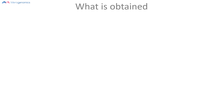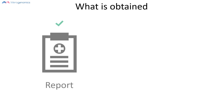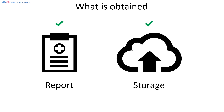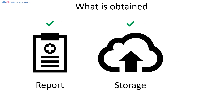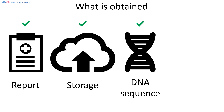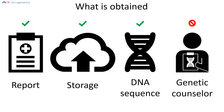What does the client obtain? The doctor receives a report based on clinical analysis of the DNA sequence, and the DNA sequence itself is stored in perpetuity by the company. You can also obtain the DNA sequence if you request it — Merogenomics recommends this to all its clients. However, you will not obtain access to a genetic counselor through the test itself, though Merogenomics can help you with private access.